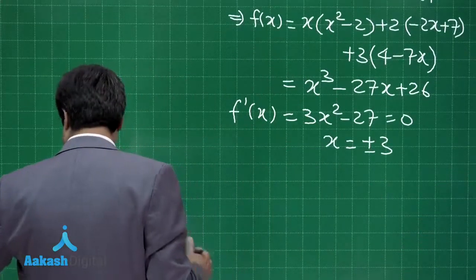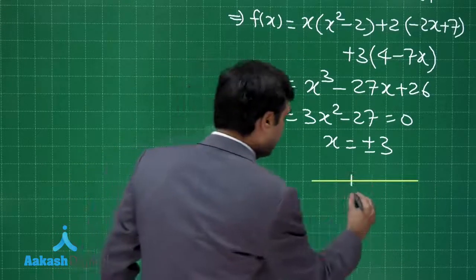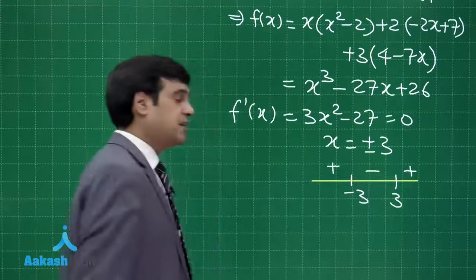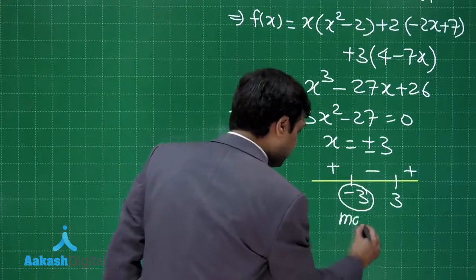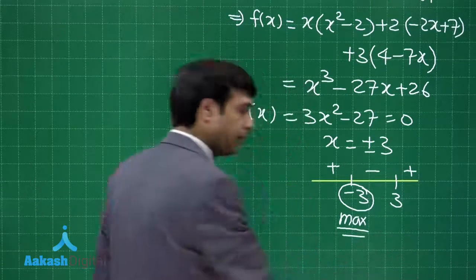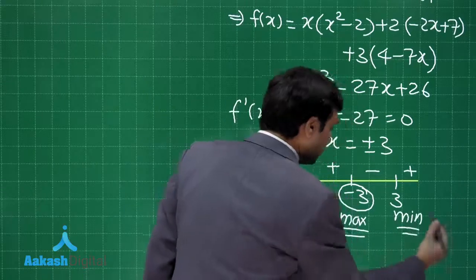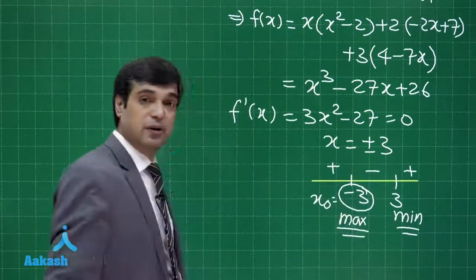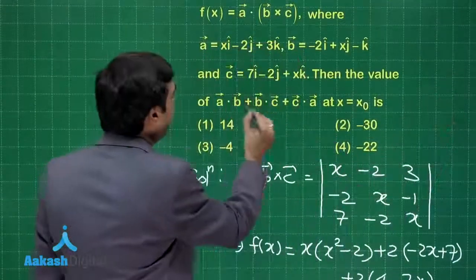Now when you consider it on the number line, points minus 3 and 3, you can see that the derivative is changing its sign from positive to negative about point minus 3. So this is the point of maxima and this is the point of minima. The question is saying x naught is the point of maxima, so this is my x naught.